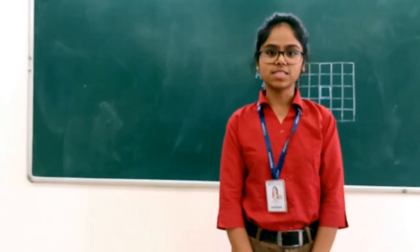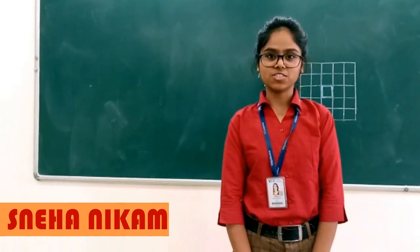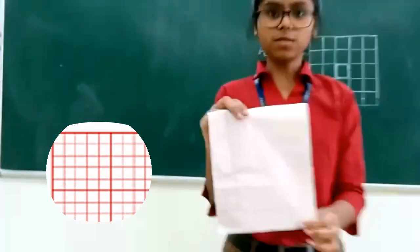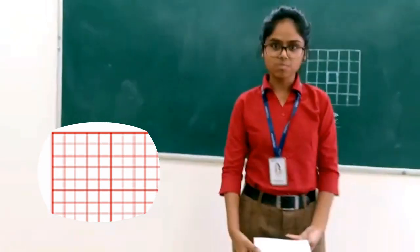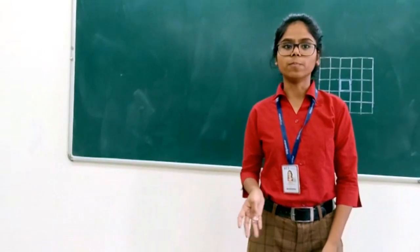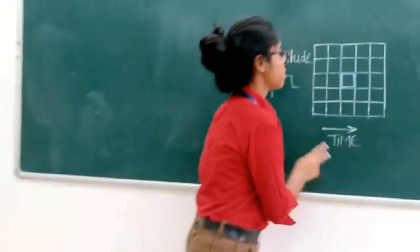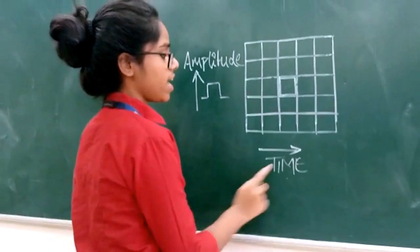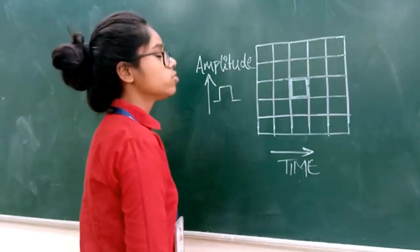Hello friends. I am Sneha and I am going to explain about ECG paper. This is the ECG paper, which is also called thermal paper, which converts heat into color. On the small representation of ECG paper, the x-axis shows time and the y-axis shows amplitude.